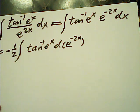Then I write this one as tan(e^x) and I combine these two as d(e^(-2x)). So I write negative half just to maintain equal sign. Then I can use by parts, right? This is u dv.